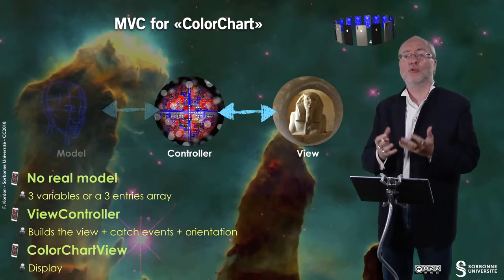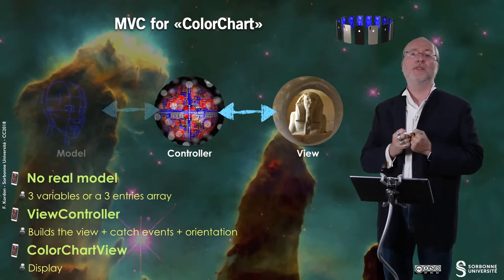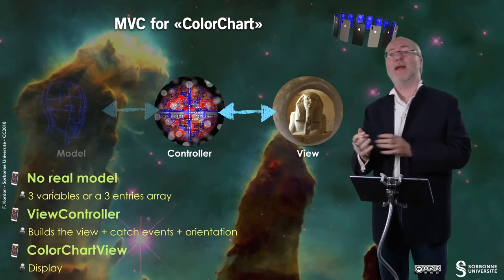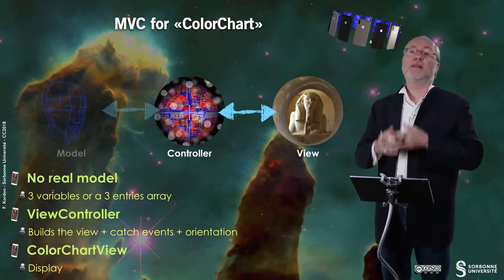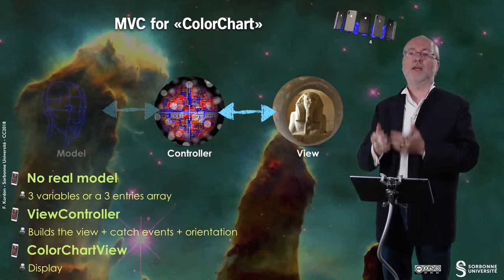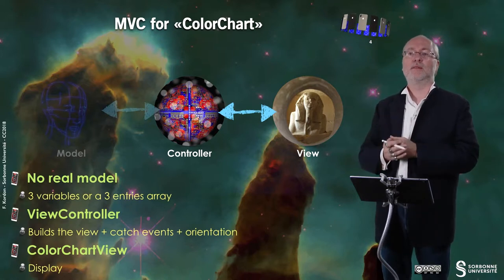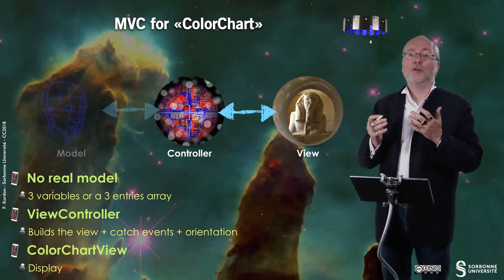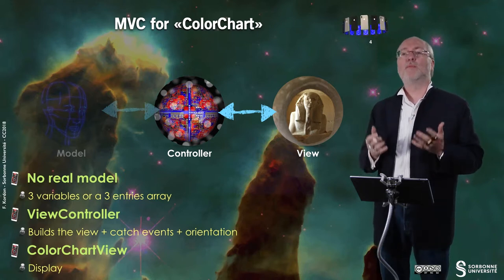But you have a view controller, and in fact, when you implemented color chart using Storyboard, you fill methods in the view controller because the controller is catching events from the interface. And if you handle the display programmatically, then you will need an extra view — a class inherited from UIView — to handle the display programmatically.